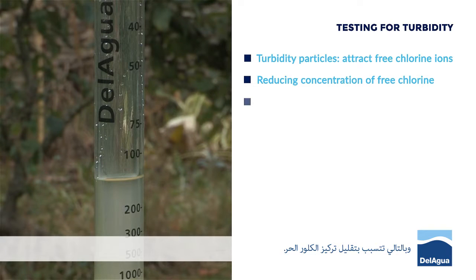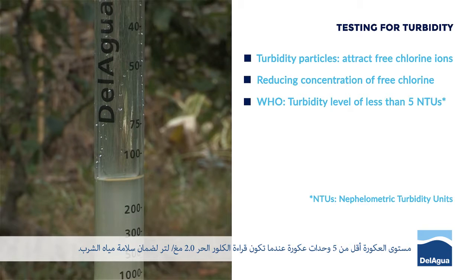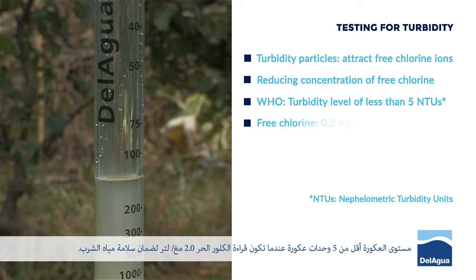The World Health Organisation suggests a turbidity level of less than 5 NTUs for drinking water safety when used in conjunction with a free chlorine reading of 0.2 mg per litre.